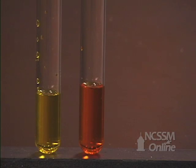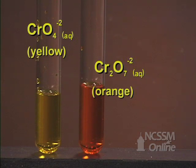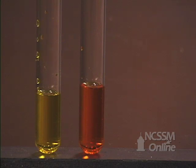We will look at the equilibrium between the chromate ion and the dichromate ion. The chromate ion in solution is yellow. The dichromate ion in solution is orange.